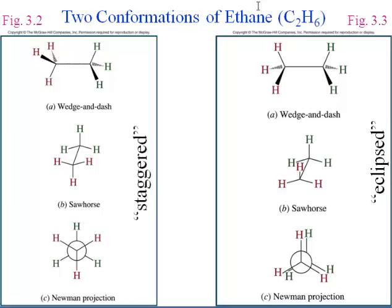The one labeled as staggered is the more stable. This picture at the bottom is the easiest way to distinguish this conformation from its neighbor — that's called a Newman projection. We assume that this Y-shaped series of bonds meets at a carbon that's directly in front of the one that's behind it. This larger circle is a carbon that's directly behind the one in front. So we're looking down the barrel of that carbon-carbon bond in ethane.